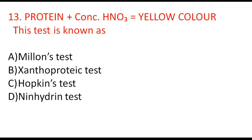Next question: protein + concentrated HNO3 gives a yellow color — this test is known as Millon's test, Xanthoproteic test, Hopkins test, or Ninhydrin test? The correct option is B, Xanthoproteic test. This test is shown by amino acids which have an aromatic benzene ring in their structure.